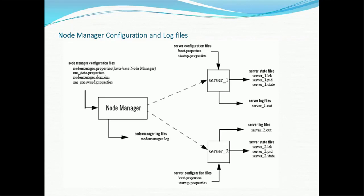Summary of Node Manager configuration files: node manager.properties, nm_data.properties, node manager.domains, and nm_password.properties. For each managed server, there are boot.properties and startup.properties. Server state files include server_one.lck, server_one.pid (process ID), and server_one.state (running/stopped). Server log files are named server_one.out. Node Manager maintains its own log in node manager.log.